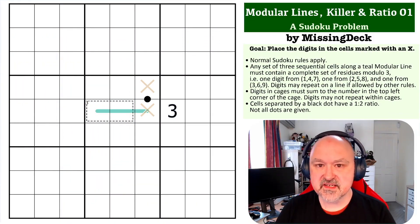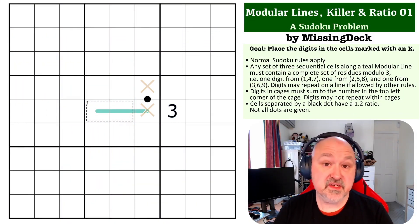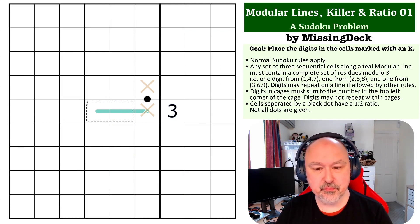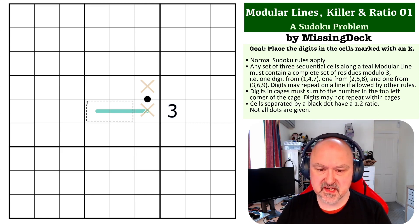Hey, this is Premster, and this is the next problem in my Sudoku problem series. This is a modular lines, killer, and ratio problem. The name makes the problem look more complex than it is.